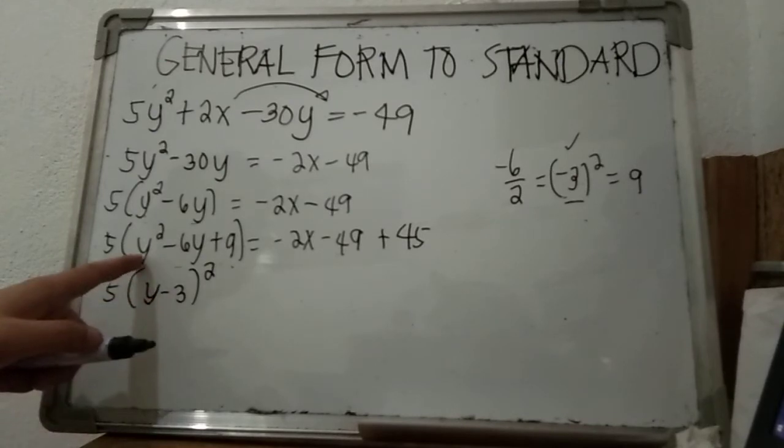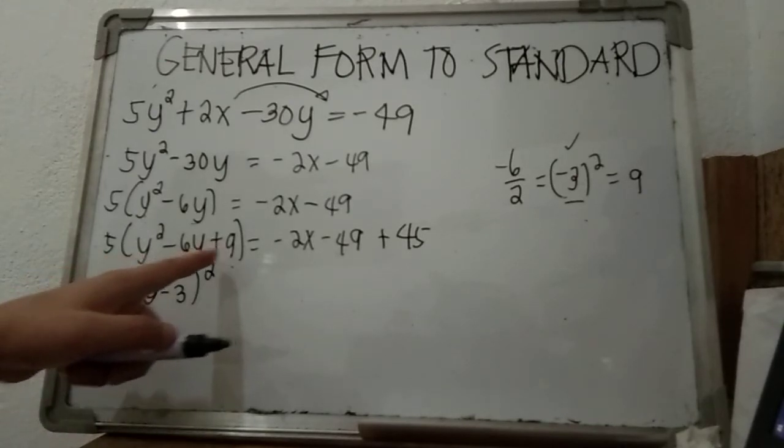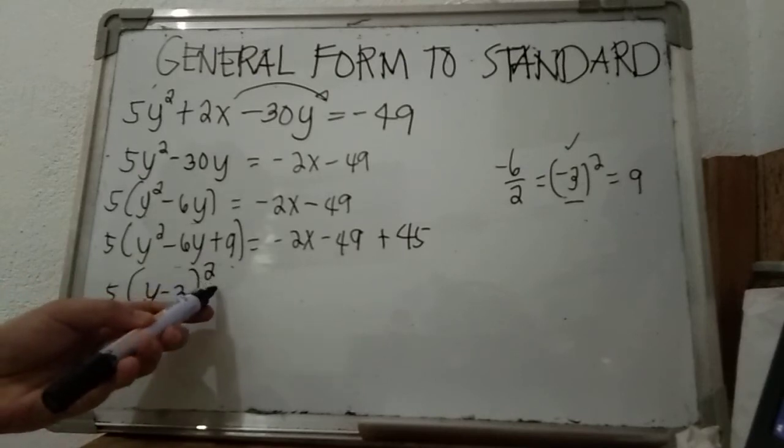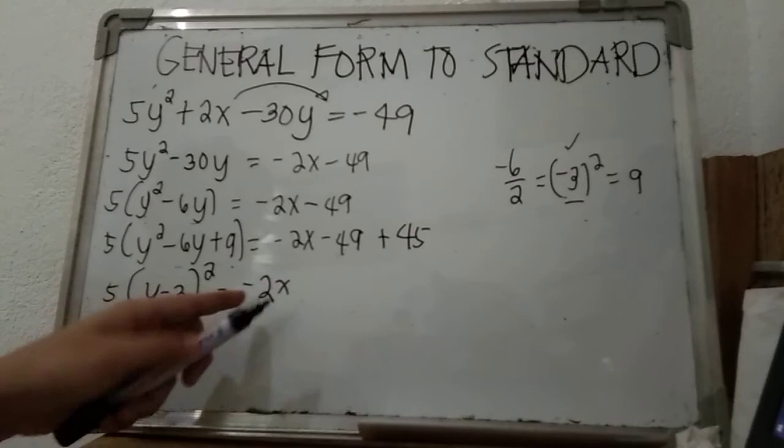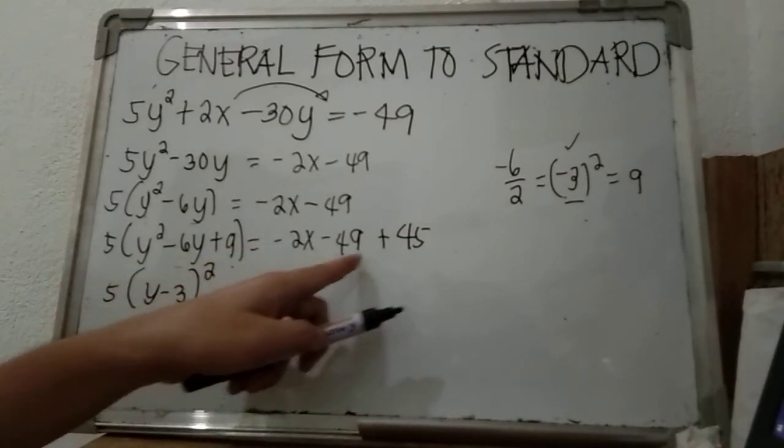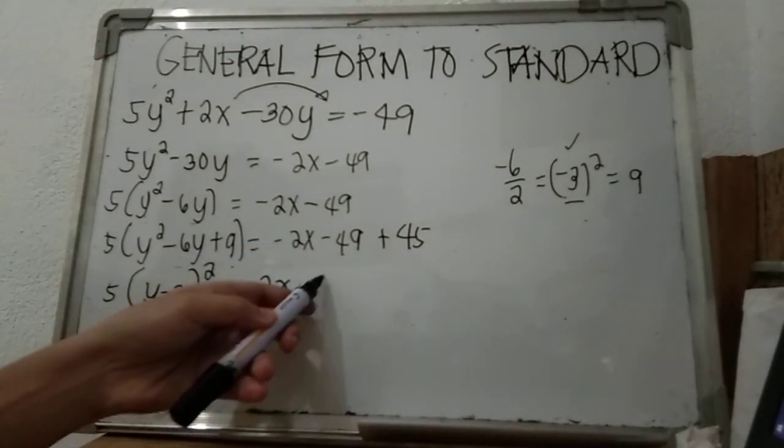So the factored form of y² minus 6y plus 9 is (y minus 3)². Simplifying the right side: negative 2x, negative 49 plus 45, that is actually negative 4.